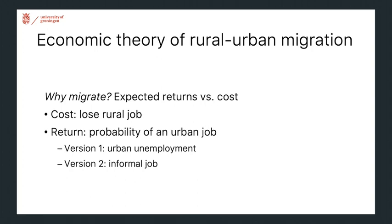The Harris-Todaro model is an economic theory of migration from rural areas to the city. It casts this decision in a cost-benefit setting where the potential migrant trades off the expected returns versus the cost of migration. The cost of migration is that this person will lose their rural job and the pay that comes with it. The return is the probability of getting an urban job that is potentially better paying.